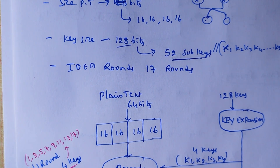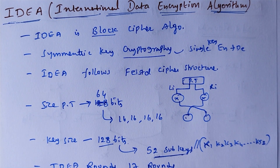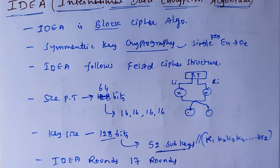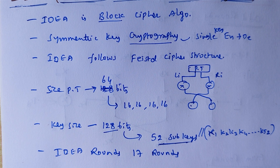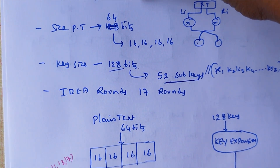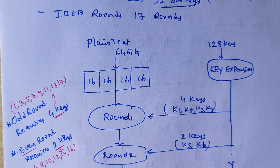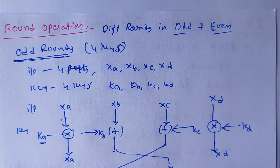This is about the IDEA algorithm. IDEA is a block cipher and a symmetric cryptography algorithm that follows the Feistel cipher structure. The plain text size is 64 bits, divided into 4 parts of 16 bits each. The key size is 128 bits, expanded into 52 sub-keys. IDEA performs a total of 17 rounds, with different operations for odd and even rounds.